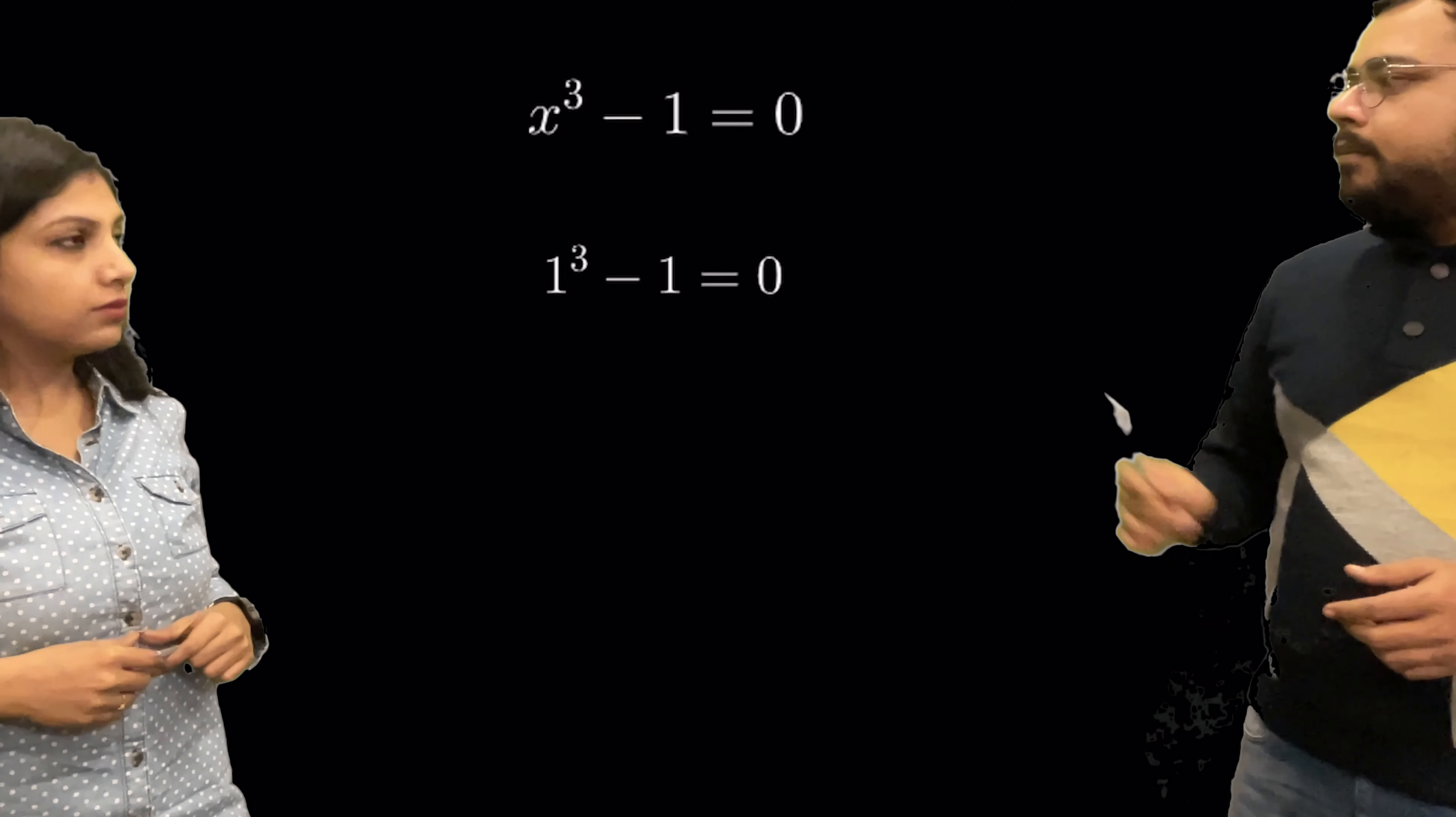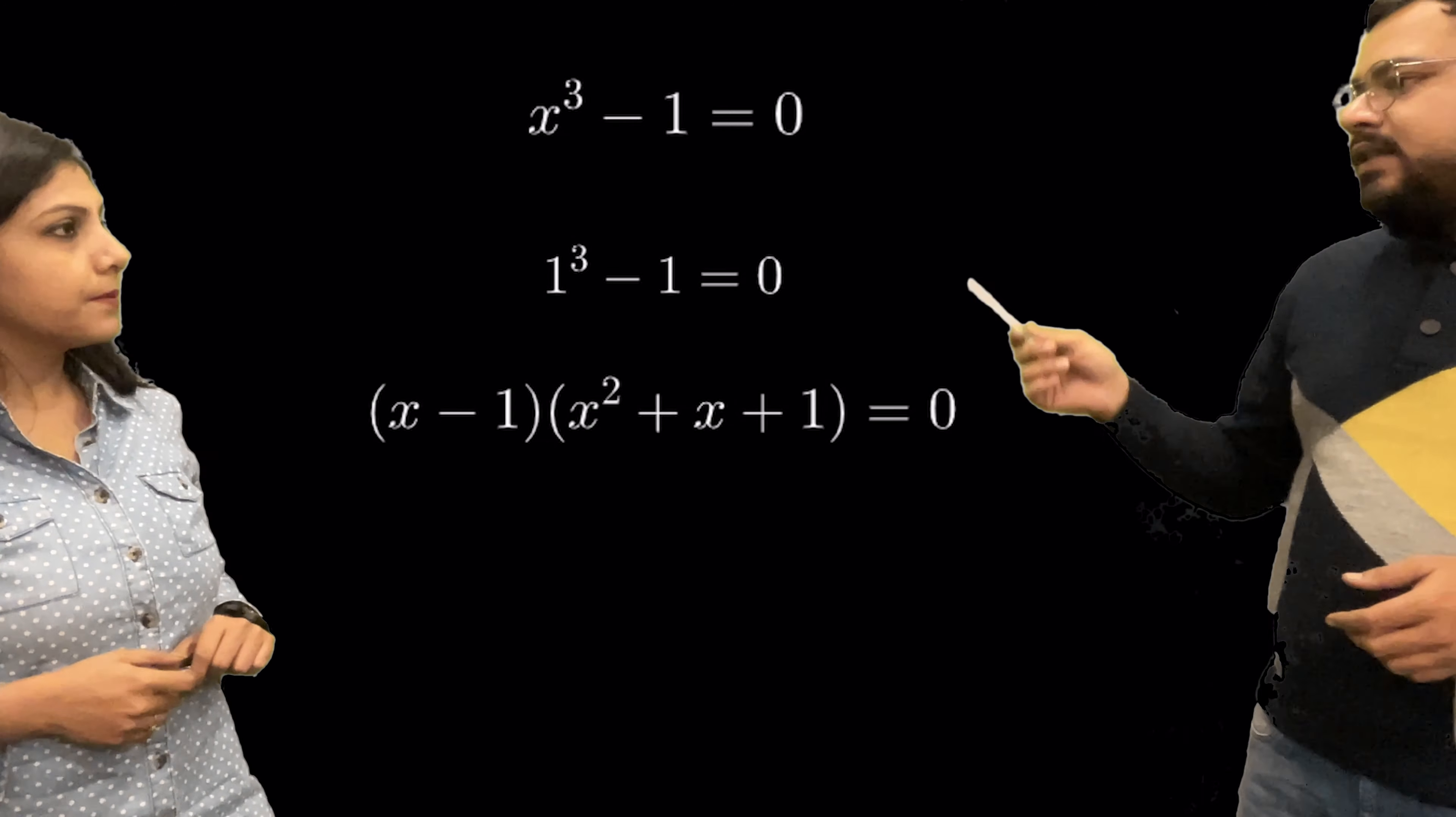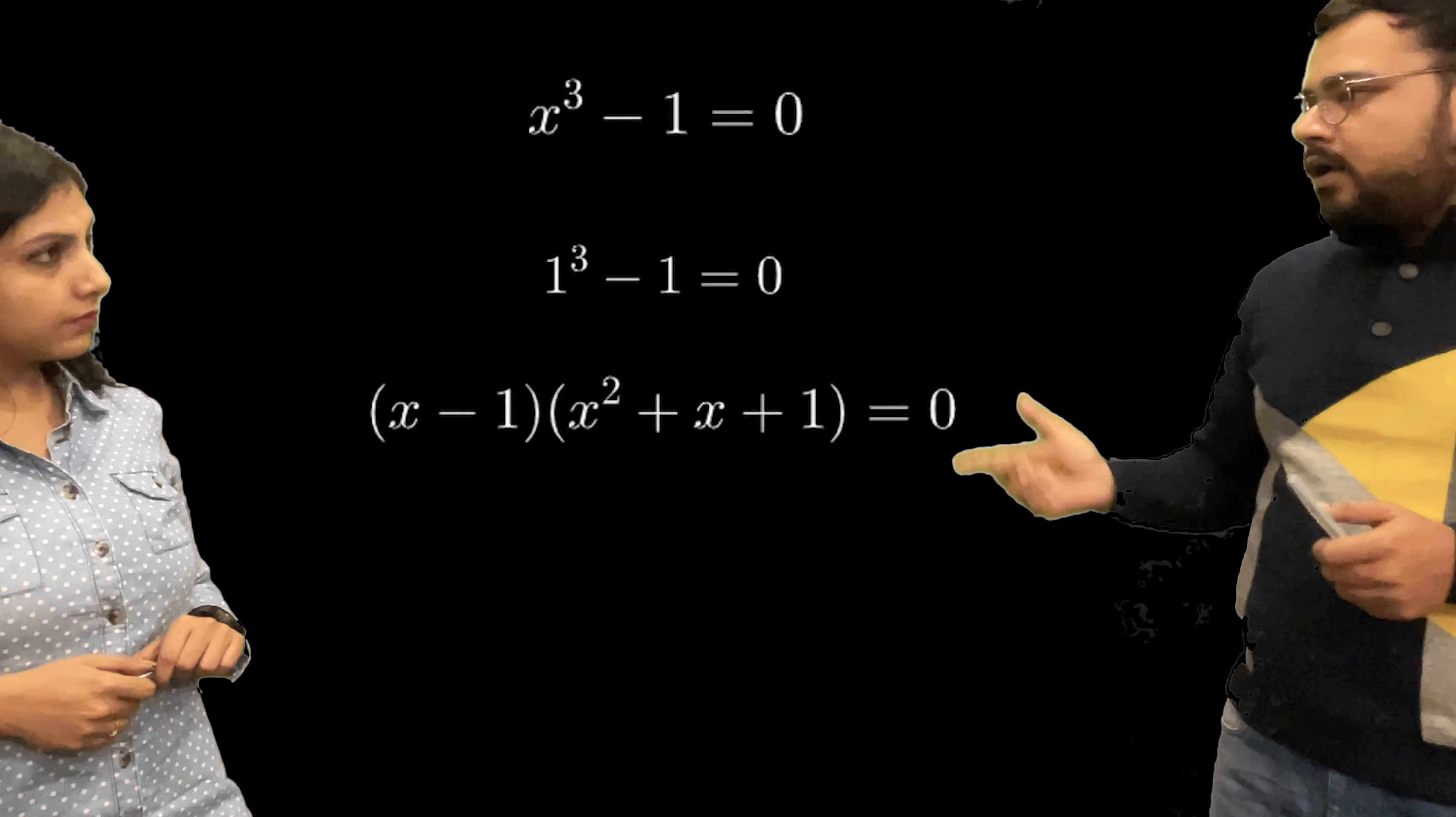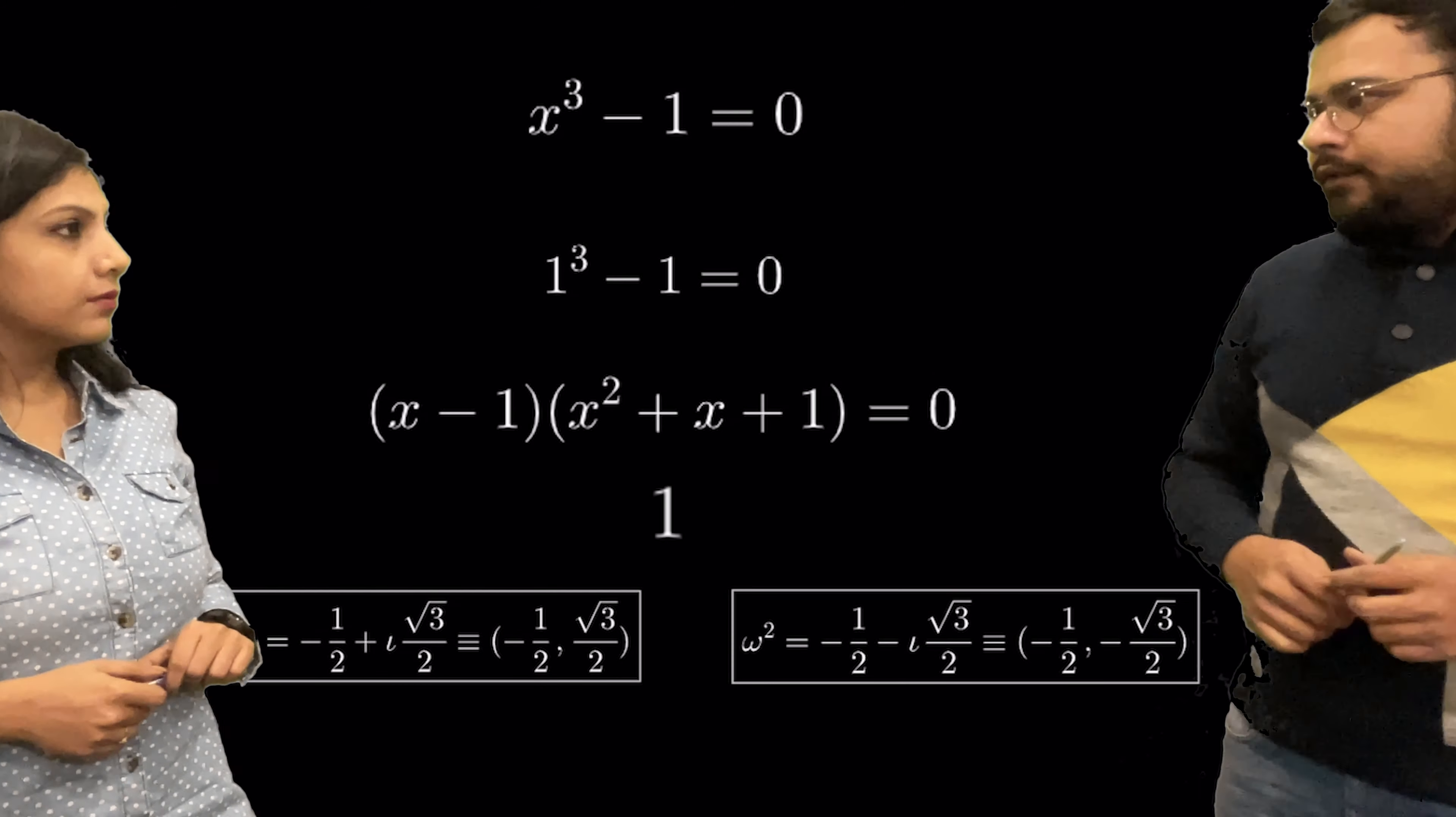So 1 is one of the roots. But if 1 is a root, that means x minus 1 is a factor of this equation. So if we factorize it, there is another factor which is x square plus x plus 1. So there are other two roots which are complex roots and they are roots of this quadratic equation, which we can find out very easily. And you can see this. These are the complex roots. So these three things together, they are called the cube roots of unity.